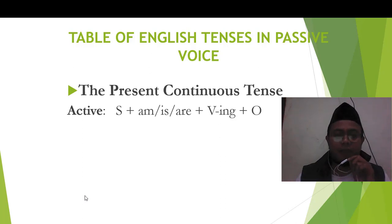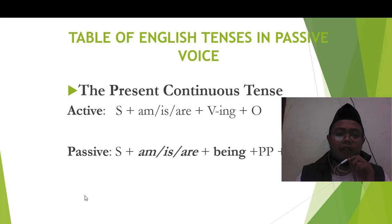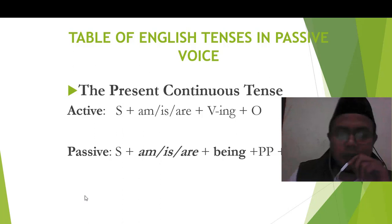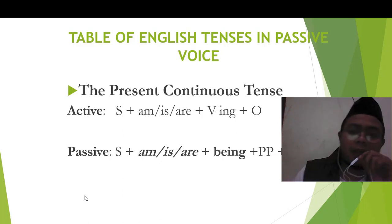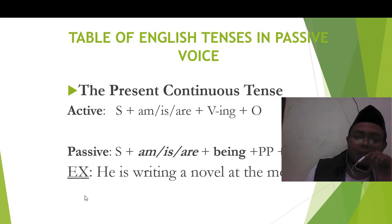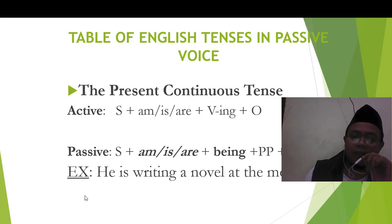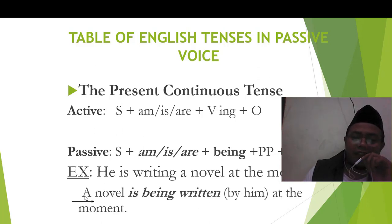Present continuous tense. Subject plus to be plus verb-ing plus object. It becomes subject plus am/is/are plus being plus past participle plus by plus object. Look at the example: He is writing a novel at the moment. He is subject, is writing is verb, a novel is object. It becomes: A novel is being written by him at the moment.